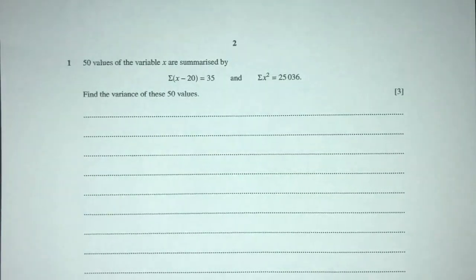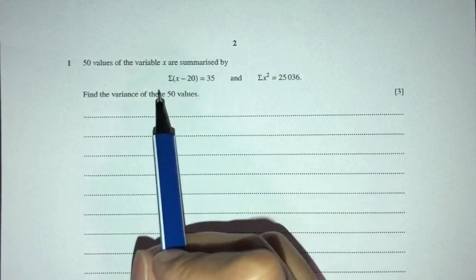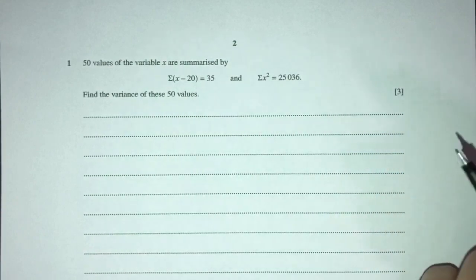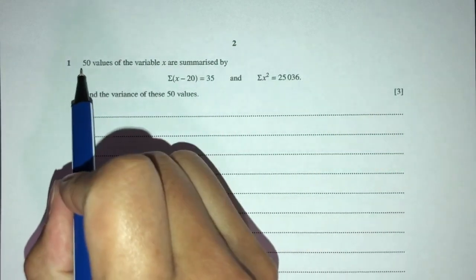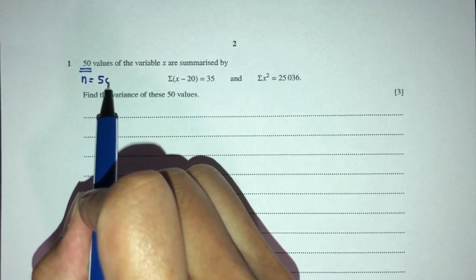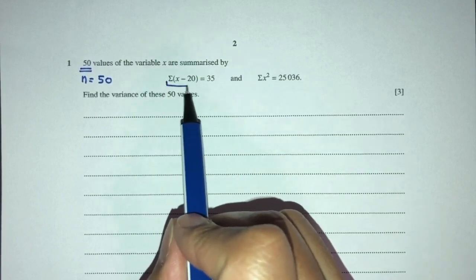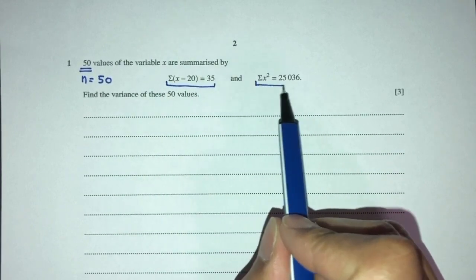So let's move on to question number one. We have 50 values of the variable x summarized by these two. Now we have 50 values, which means n, the number of values, has to be 50. Right. Now we have this information right here.